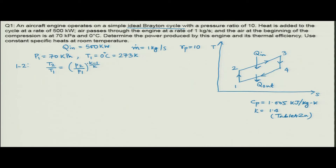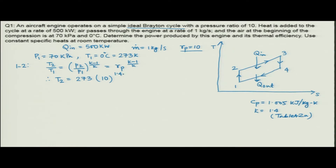P_2 by P_1 is nothing but R_p. So T_2 equals T_1 times R_p^((k-1)/k), which is 273 × 10^(0.4/1.4). If you calculate, T_2 comes out to be 527.1 Kelvin. So after compression the temperature increases to 527.1 Kelvin.